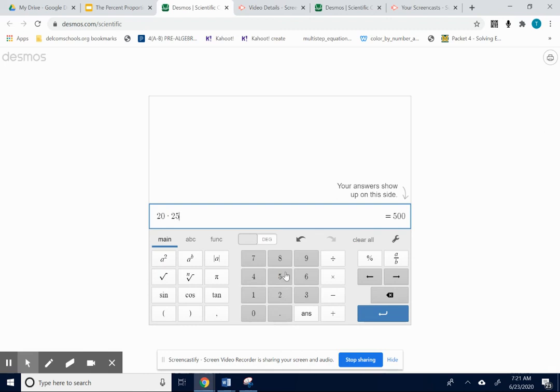Okay, on this calculator you don't have to push equals. You can just see that it's 500. It tells you the answer on the right hand side. 500. Click off of that.